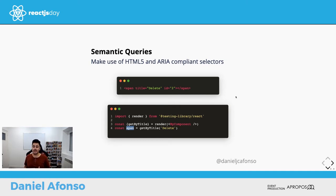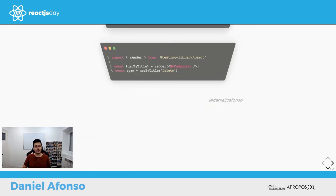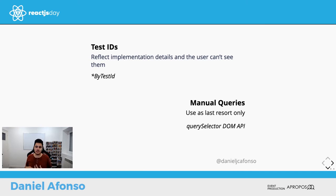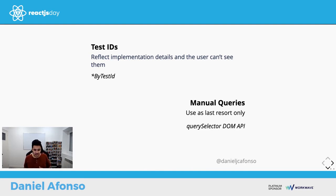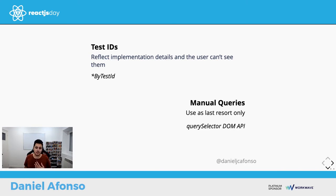Now let's look at test ID and manual queries. These reflect implementation details because users can't see or hear them. But if you have a div with dynamic text or content that varies and you need to get it in your test, you should use a test ID — a data-testid attribute assigned to your component that can be queried with a getByTestId query. If test ID doesn't work, the manual query is an escape hatch using the DOM querySelector API — use it only about 0.001% of the time.